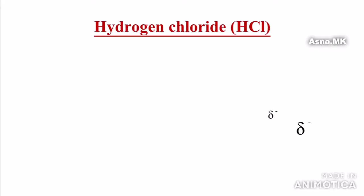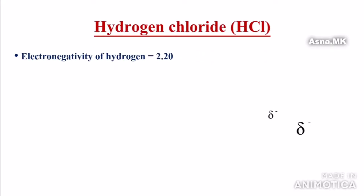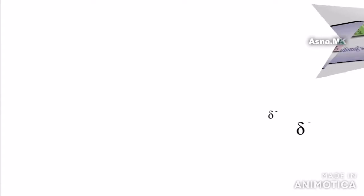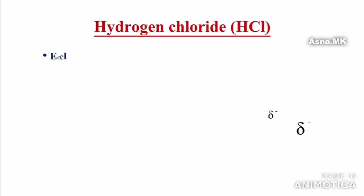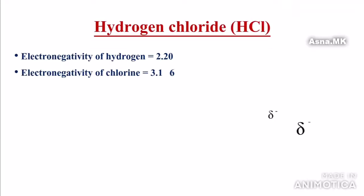Let's look at hydrogen chloride, HCl. The electronegativity of hydrogen is 2.20, and the electronegativity of chlorine is 3.16.